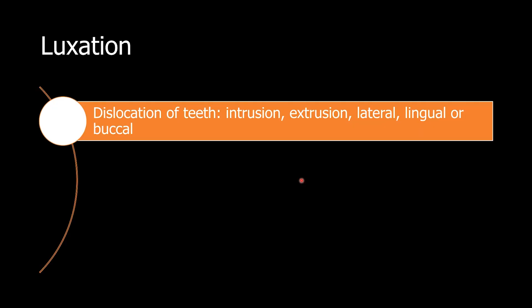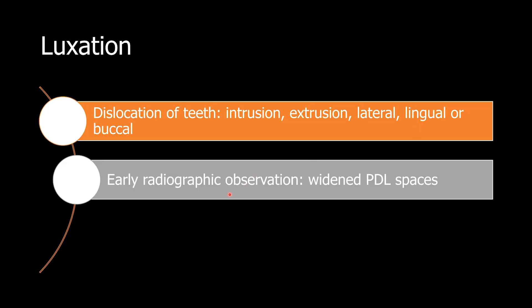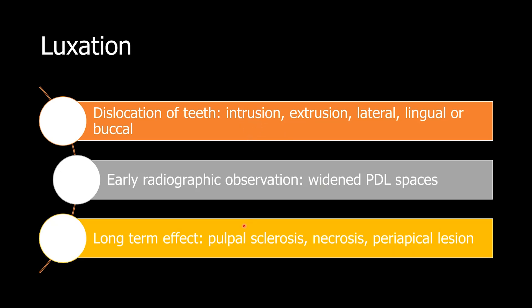With luxation, there is dislocation of the tooth. The tooth could be intruded, extruded, or displaced laterally — lingually, palatally, buccally, or labially. Early radiographic findings include a widened PDL space if the tooth is extruded, or a narrow PDL space with an apical lesion if the tooth is intruded. Long-term effects of luxation are the same: sclerosis of the pulp, necrosis, and periapical lesion.